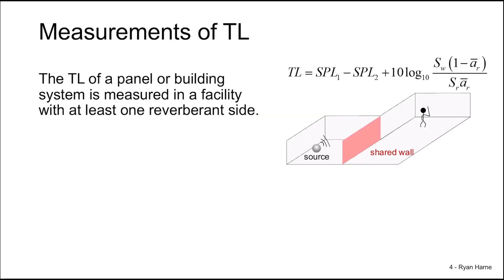To measure the transmission loss of a panel, we use a two-room facility. We've seen this equation before, where SPL1 is the sound pressure level in a source room, SPL2 is the sound pressure level in a receiving room, SW is the shared wall area, SR is the surface area of the entire receiving room, and A bar R is the total absorption coefficient of the receiving room walls. By using this equation, we can compute the transmission loss of this panel.